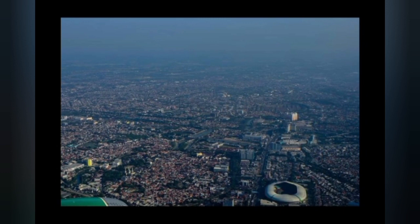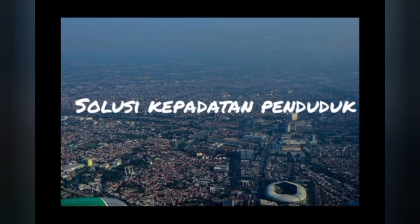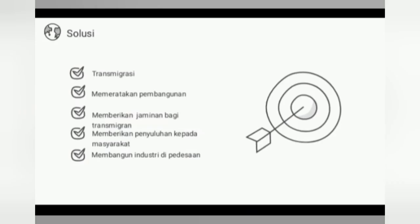Terdapat 5 solusi kepadatan penduduk: yang pertama transmigrasi, yang kedua memeratakan pembangunan, yang ketiga memberikan jaminan bagi transmigran, yang keempat memberikan penyuluhan kepada masyarakat, dan yang terakhir membangun industri di perdesaan.